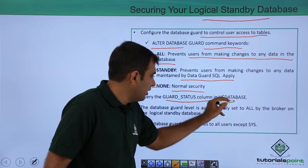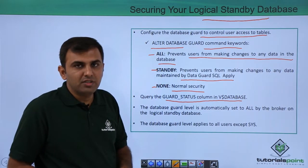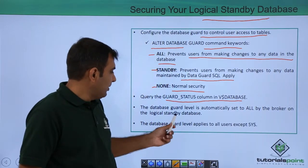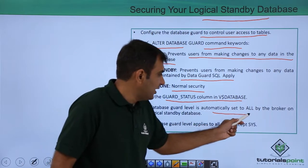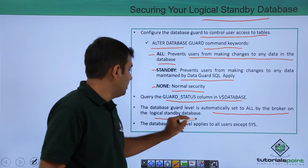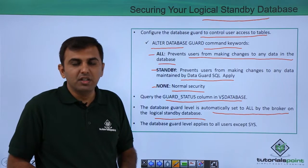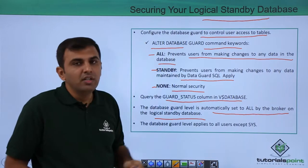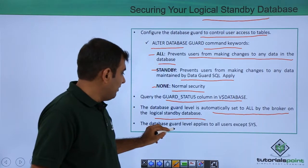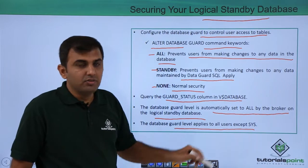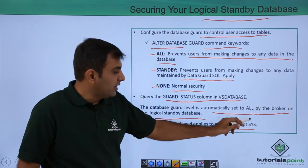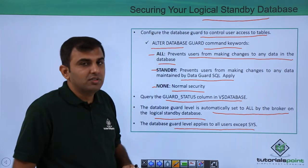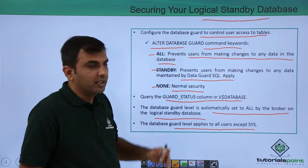You can query the guard status from the V$DATABASE view to check the status — whether it is STANDBY, ALL, or NONE. The database guard level is automatically set to ALL by the broker on the logical standby database, meaning it prevents users from making any changes. This guard level applies to all users except SYS.